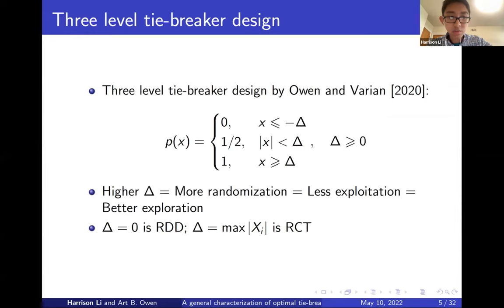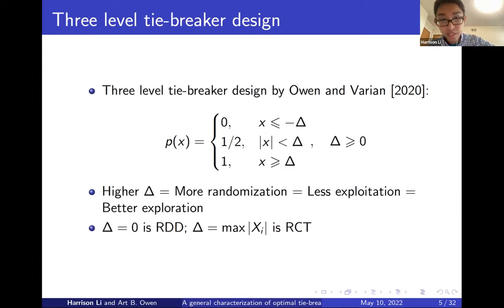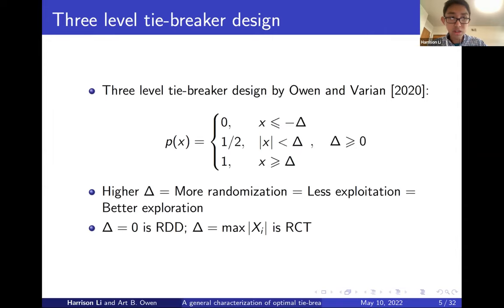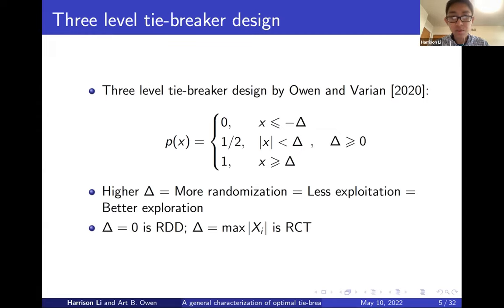The three-level tiebreaker design, first written down by Owen and Varian in 2020, works as follows. You have a randomization window delta. If your running variable x is between minus delta and delta, you're randomly assigned treatment with probability one-half. If you're below minus delta, you never get the treatment; if you're above delta, you always get the treatment. Higher values of delta correspond to more randomization and less short-term gain. Delta equals zero is the RDD, and delta going to infinity gives you the RCT with treatment probability one-half.